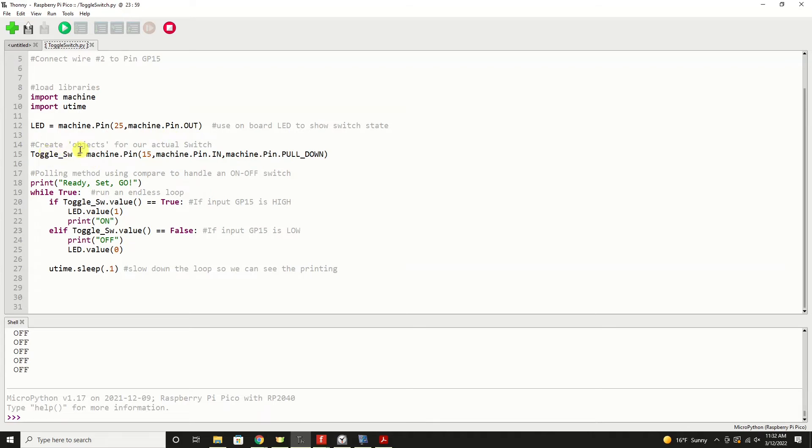We're going to create an object for our actual switch. And we're going to call it toggle switch. Seems logical for a toggle switch. If you've got multiples, you may want to use toggle underscore SW underscore one, two, three, four, etc. So we're going to create the object toggle switch, which is a machine dot pin. And it is pin number GP 15. And we're saying I want that pin to behave as an input using the IN. And then we're going to give it a pull-down resistor so that the switch would certainly be in the zero state when nothing is connected to it. And therefore it isn't floating.